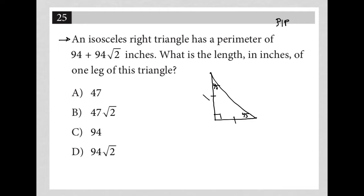the first page of the math test, we can consider this to be side x, x, and x square root 2. We know the perimeter is equal to 94 plus 94 root 2.